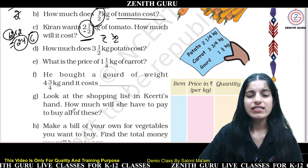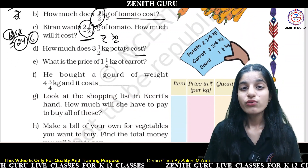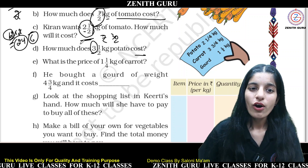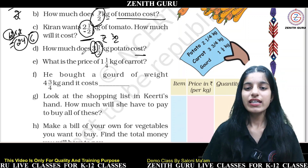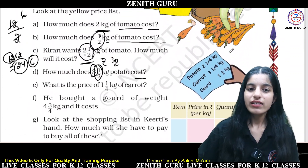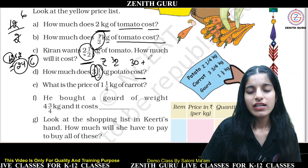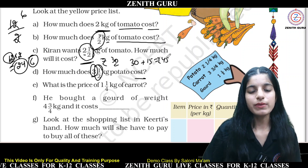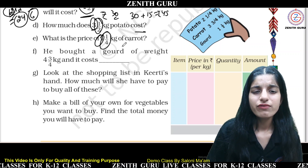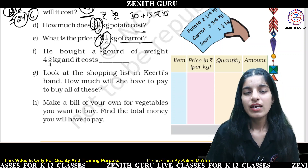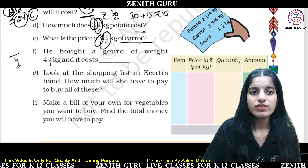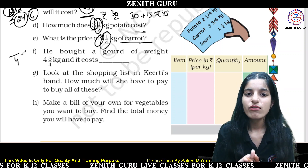How much does 3 and a half kg of potato cost? Potato is 10 rupees per kg. 3 kg costs 30 rupees, and half kg costs 5 rupees. So 30 plus 15 — wait, 30 plus 15 equals 45 rupees. For the price of 1 and 1/4 kg of carrot: find 1 kg cost, then divide by 4 to get the 1/4 part, and add them together.